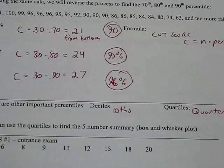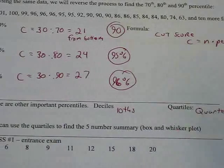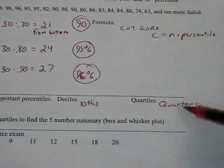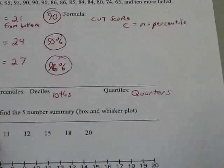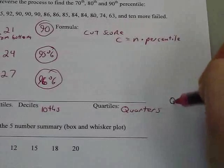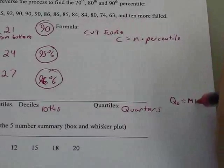There are other important percentiles. There are deciles, which go by tens, and the quartiles, which go by quarters. And this right here is our most important one because our Q0, or our first quarter, is our minimum.